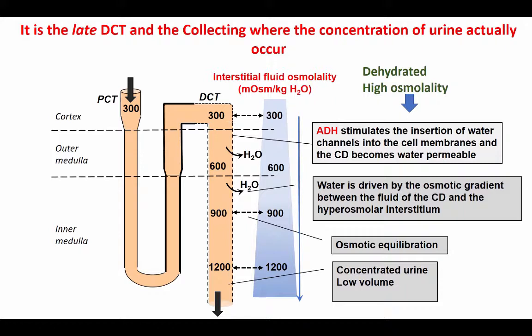In summary, there are two major issues that you need to remember. First, concentration of urine will not happen in the absence of ADH. Without ADH present, the medullary interstitium has an osmolality of only approximately 600 milliosmoles per kilogram, and as a result, not as much water will be pulled from the collecting duct into the interstitium.